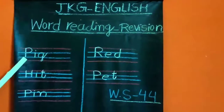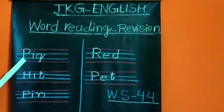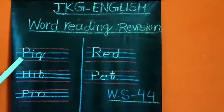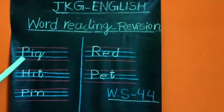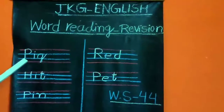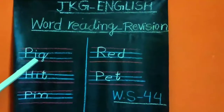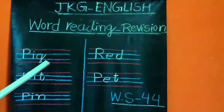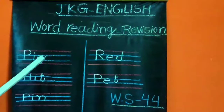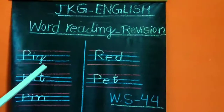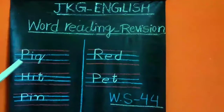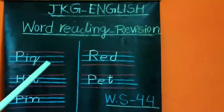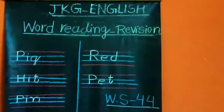Here I have written 'pig'. So how we will read this word? The beginning sound of this letter is 'pa', the middle sound is 'e', and the end sound is 'ga'. So how we will pronounce this word? Pa, e, ga — pig. Pig is an animal.